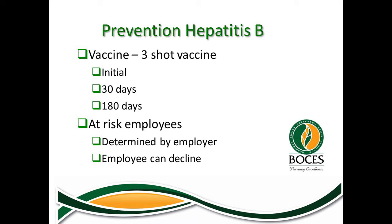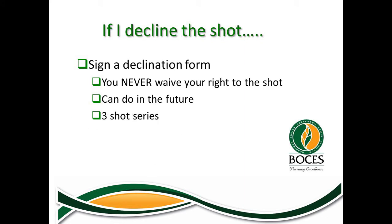The employer determines which employees are at risk. You always have the right to decline the shots, but that declination does not waive your right to receive them — you may have the shot at any point in the future. If an incident occurs and you believe you had exposure, you would have a conversation with your healthcare provider, and a determination would be made about starting the series of shots at that point.